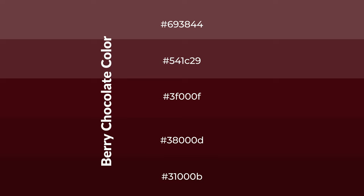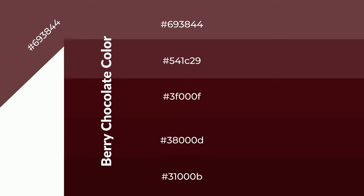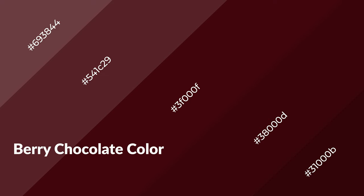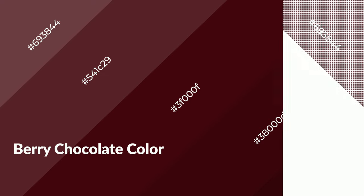To generate shades of a color, we add black to the color. It is used in patterns, 3D effects, and layers. Shades create depth and drama. Berry chocolate is a warm color and it emits cozier and active emotion.